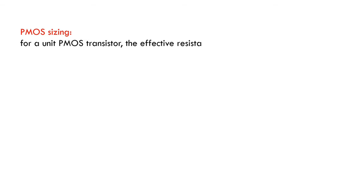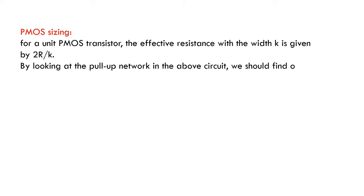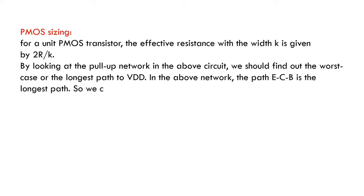For a unit PMOS transistor, the effective resistance with width K is given by 2R/K. By looking at the pull-up network in the above circuit, we should find out the worst case or the longest path to VDD. In the above network, the path ECB is the longest path. So we can write the equation 2R/K plus 2R/K plus 2R/K equals R, where R is the effective resistance.